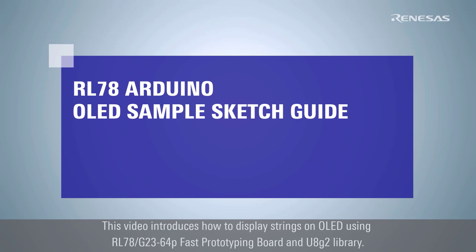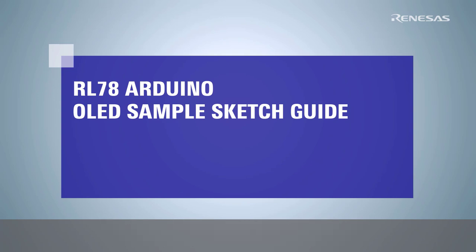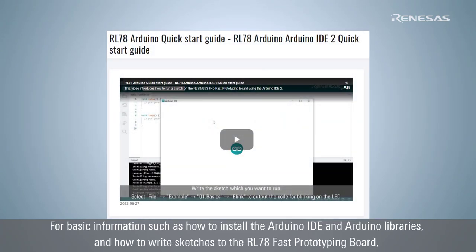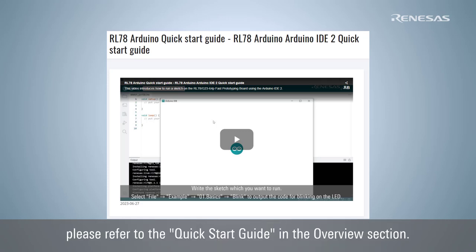This video introduces how to display strings on OLED using the RL78G23 60 4-pin fast prototyping board and U8G2 library. For basic information such as how to install the Arduino IDE and Arduino libraries, and how to write sketches to the RL78 fast prototyping board, please refer to the quick start guide in the overview section.